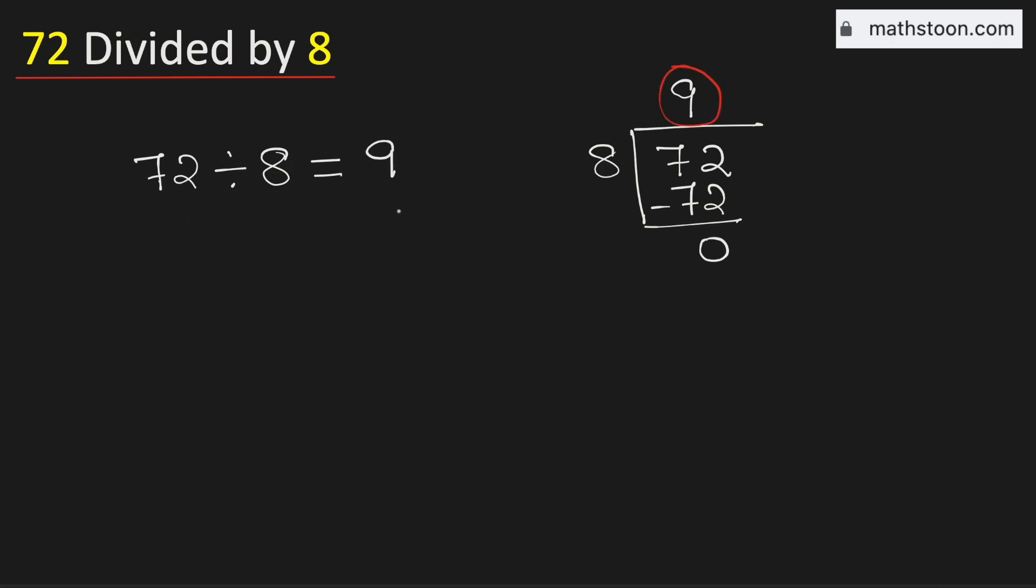We can also find this value using another method. We know that 72 divided by 8 can be written as 72 over 8.